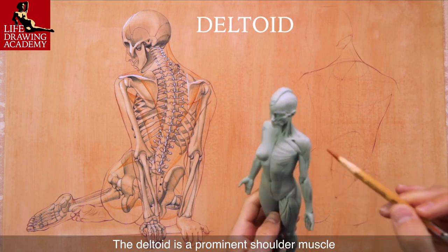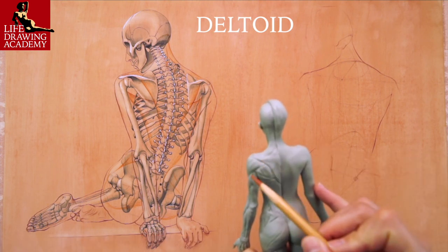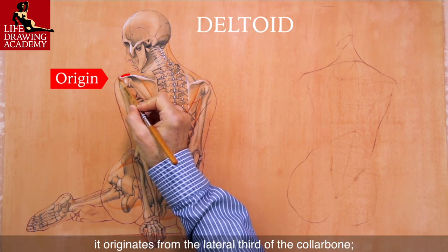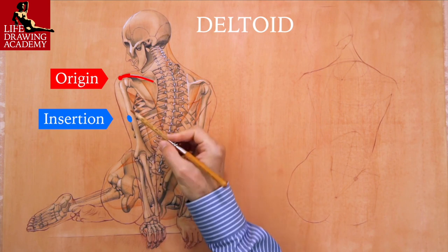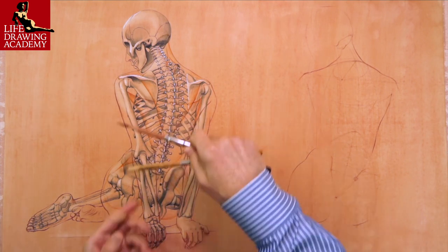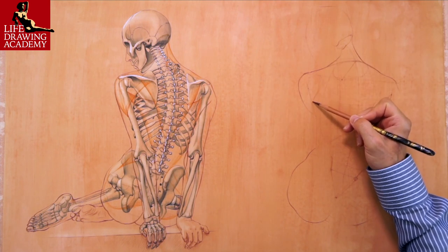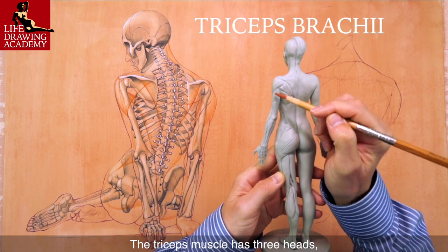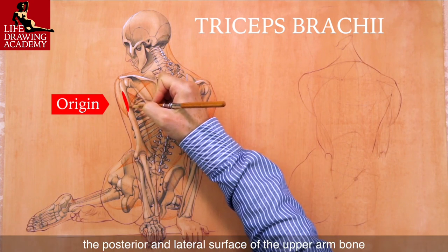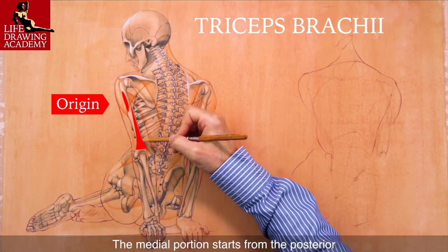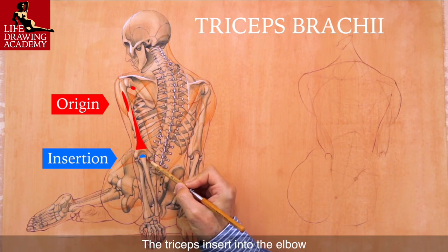The deltoid is a prominent shoulder muscle. It has three portions — front, side, and back. At the front, it originates from the lateral side of the collarbone. The lateral portion originates from the acromion. And at the back, it starts from the spine of the shoulder blade. The deltoid inserts into the middle of the upper arm bone. The triceps muscle has three heads, which shape the back side of the upper arm. Its lateral head originates from the posterior and lateral surface of the upper arm bone, the medial portion from the posterior and medial surface, and the long portion originates from the shoulder blade just below the shoulder joint. The triceps insert into the elbow.